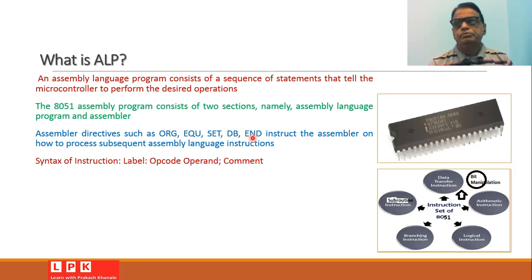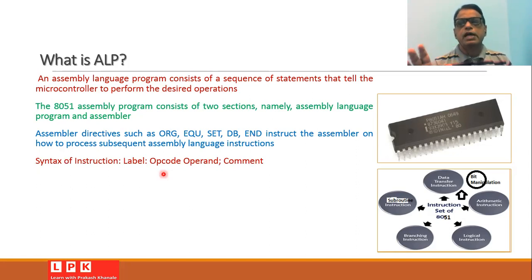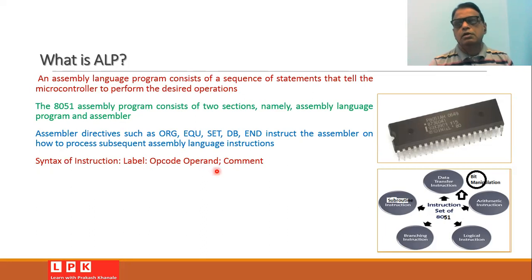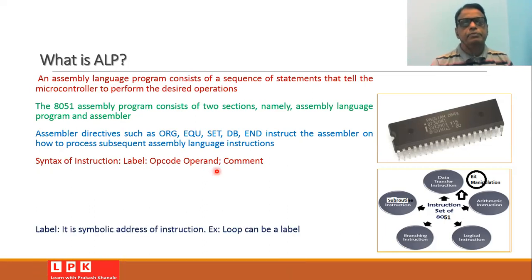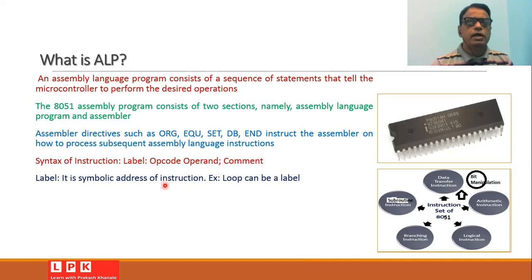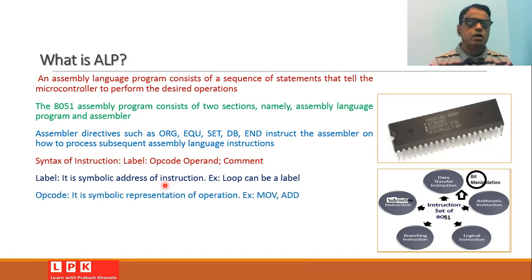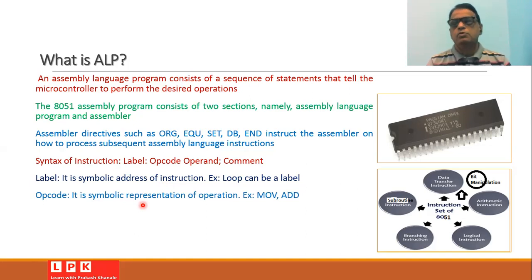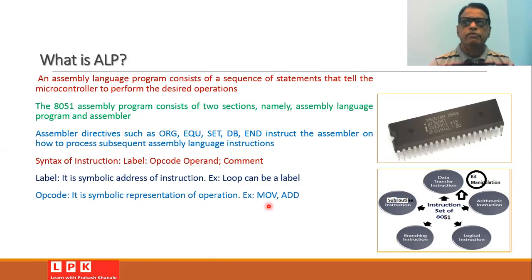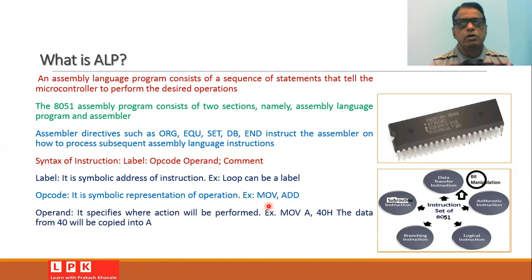Whenever we write any instruction in the assembly language program, the instruction has a specific syntax: label followed by a colon, then opcode, then operand, then a semicolon, and then a comment. A label is simply the symbolic address of the instruction — any name can be given as a label. The opcode is a symbolic representation of the operation, using English words such as MOV, ADD, or SUB.